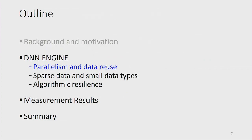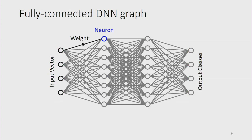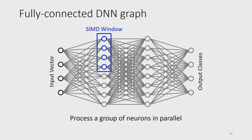Here's an outline: I'll describe the DNN Engine accelerator design, present measurement results from our 16-nanometer test chip, and then conclude. In a fully-connected DNN graph, the input is a vector of values — for instance, pixel data from an image. Hidden layers sit in the middle, and output nodes on the right give probabilities for classes. Each connecting edge represents a multiplication with a unique weight. Within a given layer, there are practically no data dependencies, so we can process a group of neurons in parallel.